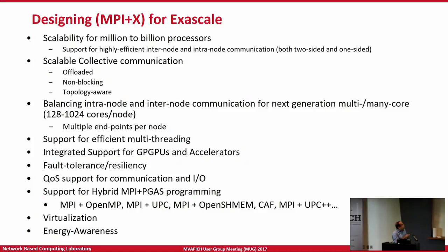Everybody has been asking for MPI plus X, where X could be anything from OpenMP to any kind of PGAS or tasks. Everybody is exploring for Exascale. You need good inter-node and intra-node communication, scalable collective communication. As we saw from Dan's talk and from the community, the number of cores has been continuously increasing. So you need a good balance between inter-node and intra-node. There is a lot of focus on multiple endpoints, efficient multi-threading, support for GPUs, accelerators, fault tolerance, QoS support, support for hybrid MPI-PGAS programming, virtualization for the cloud, and energy awareness.